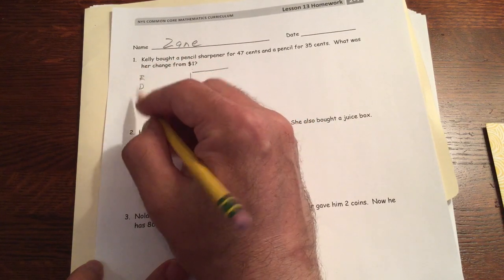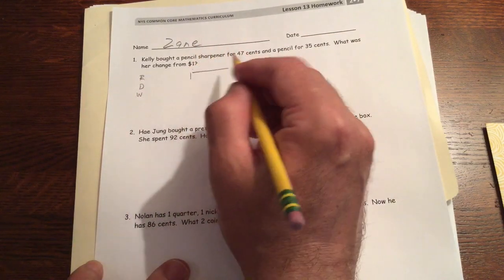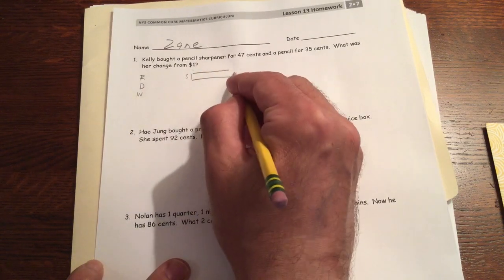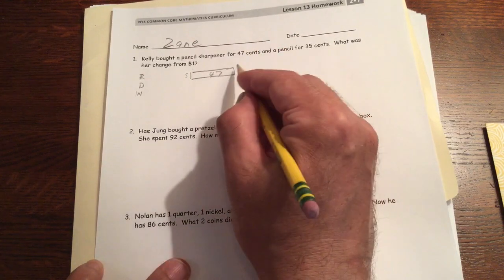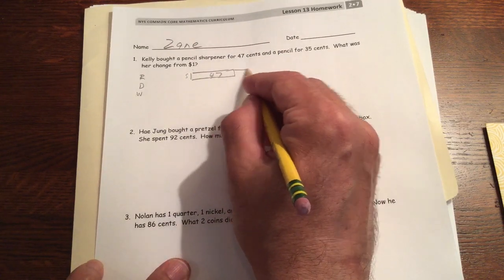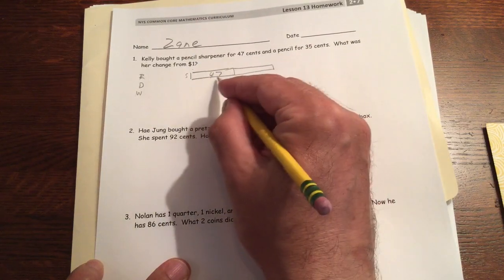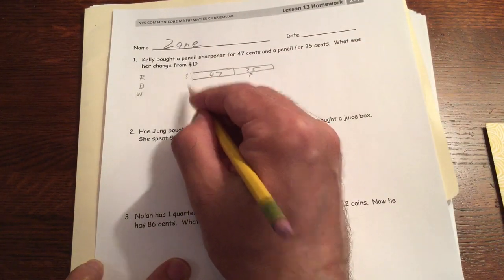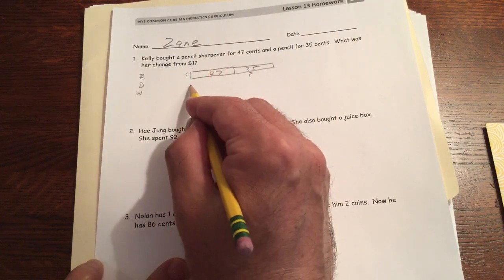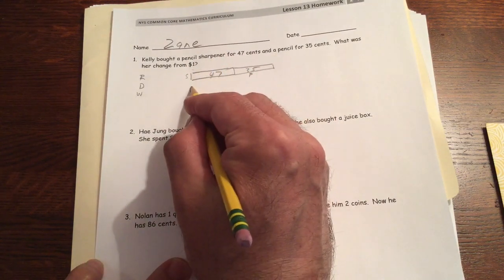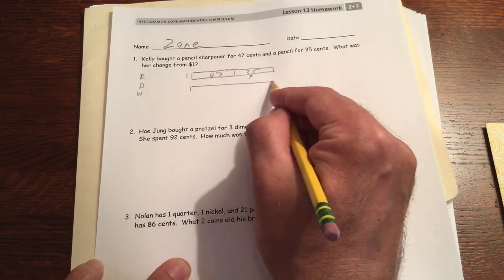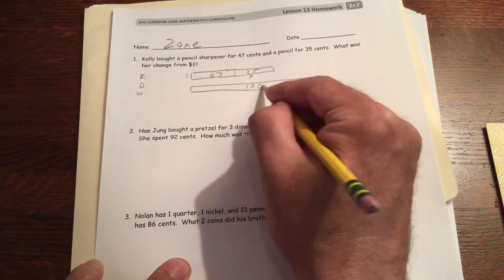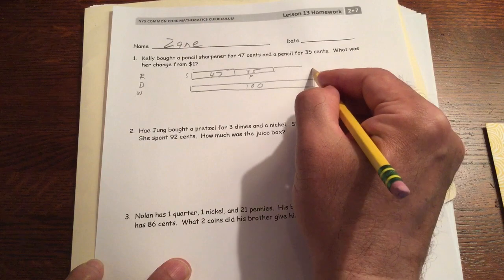So I'm gonna draw a tape diagram for this and then we'll write our equations. So we have a pencil sharpener for 47 cents and she also bought a pencil, that's P for pencil, for 35. And her change from a dollar. Now change, so she pays a dollar bill for this stuff and she's gonna get some money back. We gotta figure out, dollar's a hundred cents, we have to figure out how much money is she gonna get back.